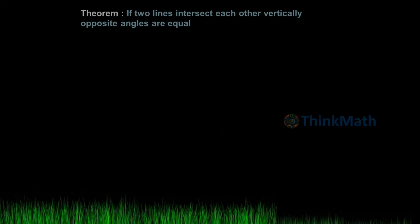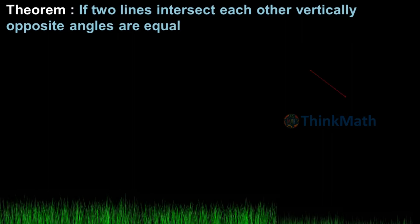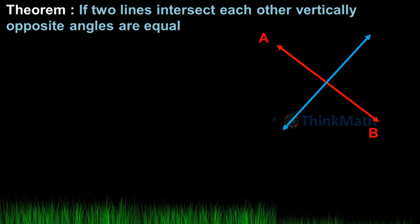Theorem: If two lines intersect each other, vertically opposite angles are equal. Consider two intersecting lines, a, b and p, q, intersecting at the point O.